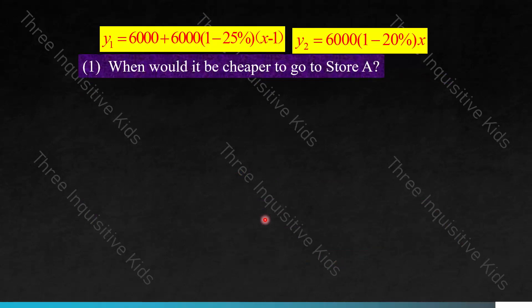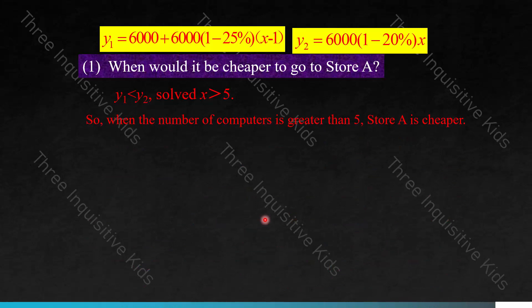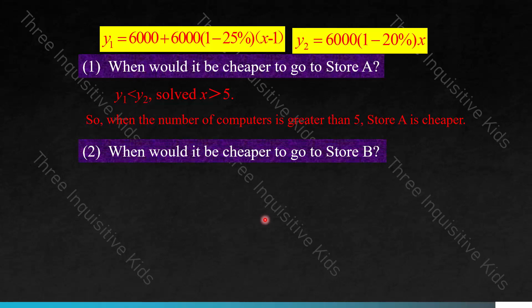These are the two functions. When would it be cheaper to go to store A? When Y1 is less than Y2, we can solve that X is greater than 5 — so when the number of computers is greater than 5, store A is cheaper. When would it be cheaper to go to store B? When Y1 is greater than Y2, X is less than 5, so store B is cheaper when buying fewer than 5 computers.